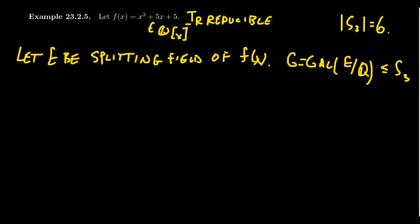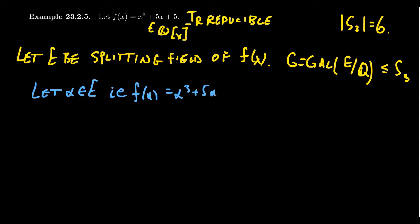Now the first thing we can do is take a single root of the polynomial. Let α be a root such that f(α) = α³ + 5α + 5 = 0. In particular, this tells us that α³ = −5(α + 1). That's the relationship we can infer from this polynomial, and that's what we know about α.